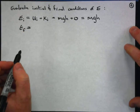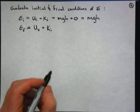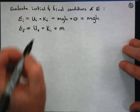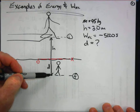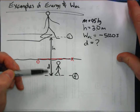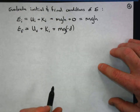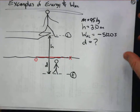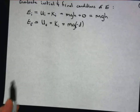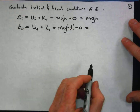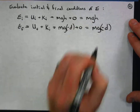For the final condition, we have final potential plus final kinetic energy. The person has moved through the water a distance D, which is in the negative direction, giving a final potential energy of Mg times negative D, or negative MgD. At the end, the person is not moving, so there's no final kinetic energy. Therefore, the total final mechanical energy is negative MgD.